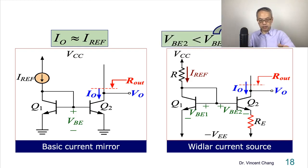But on the right, IO will be much smaller than IREF.